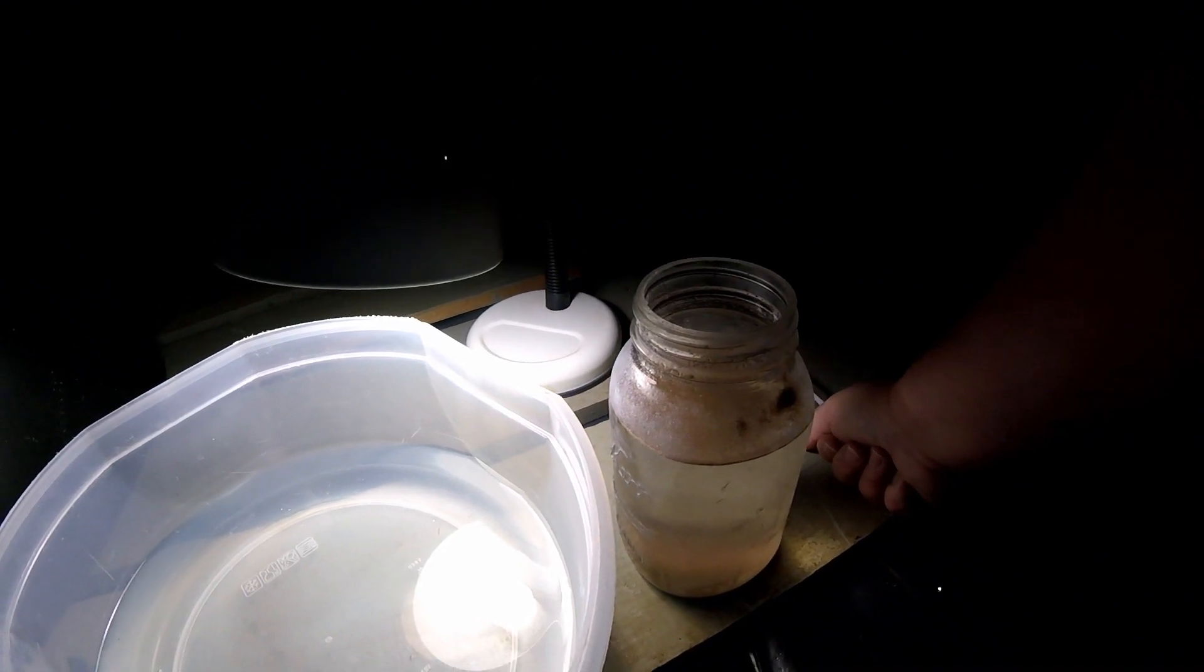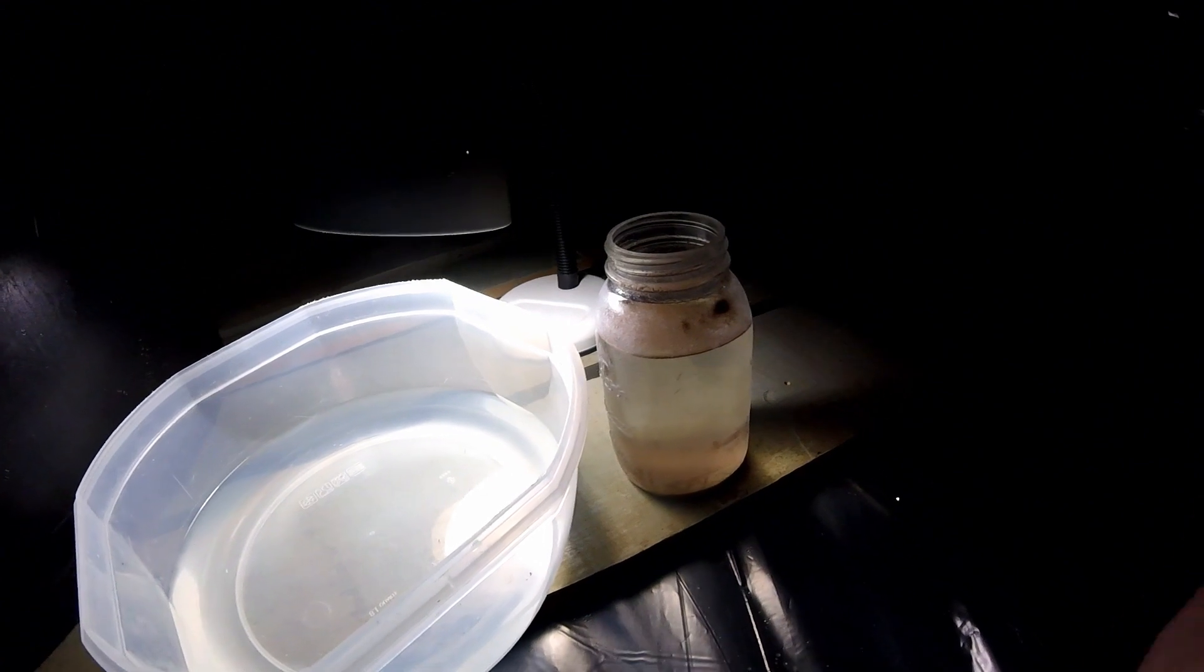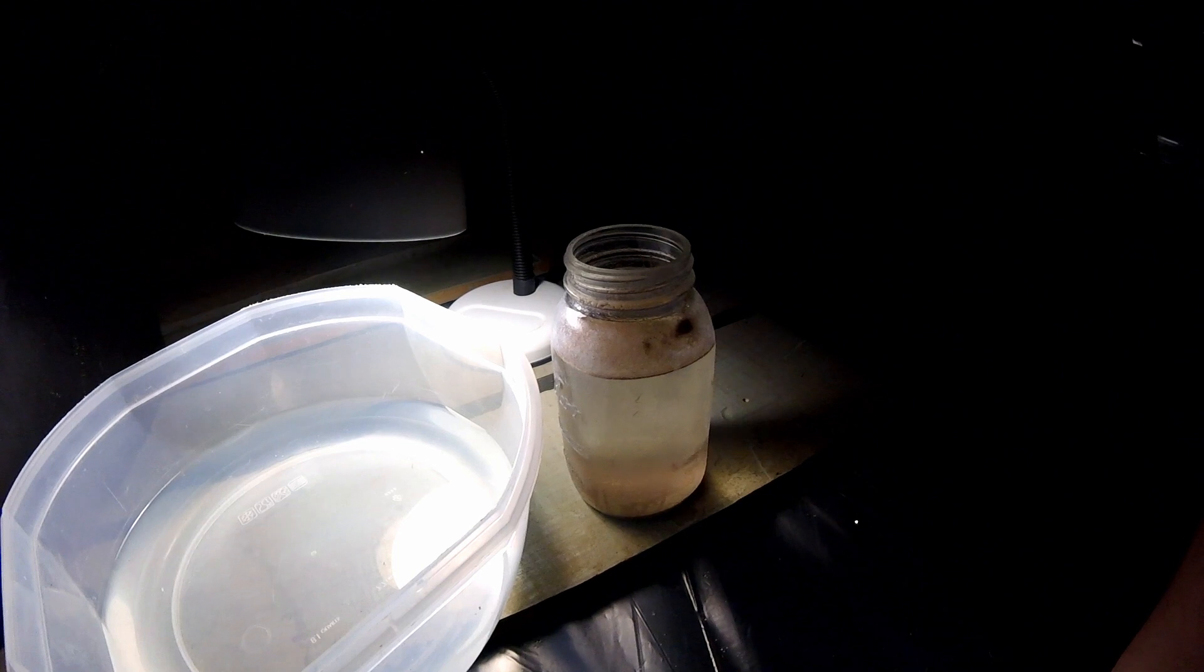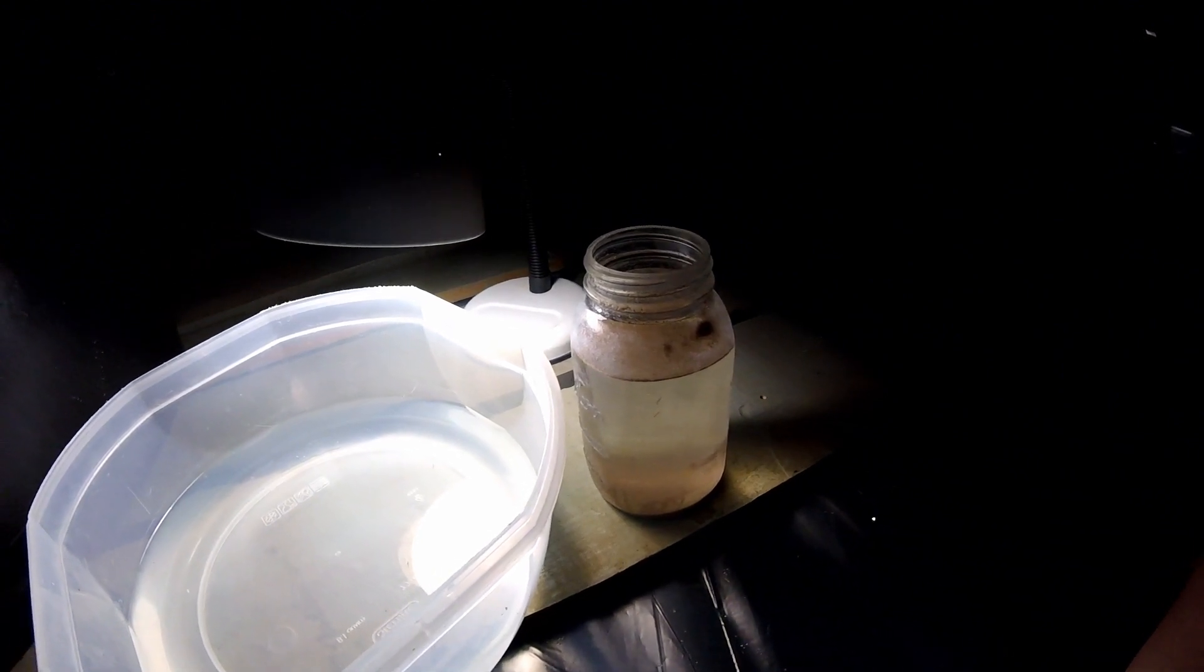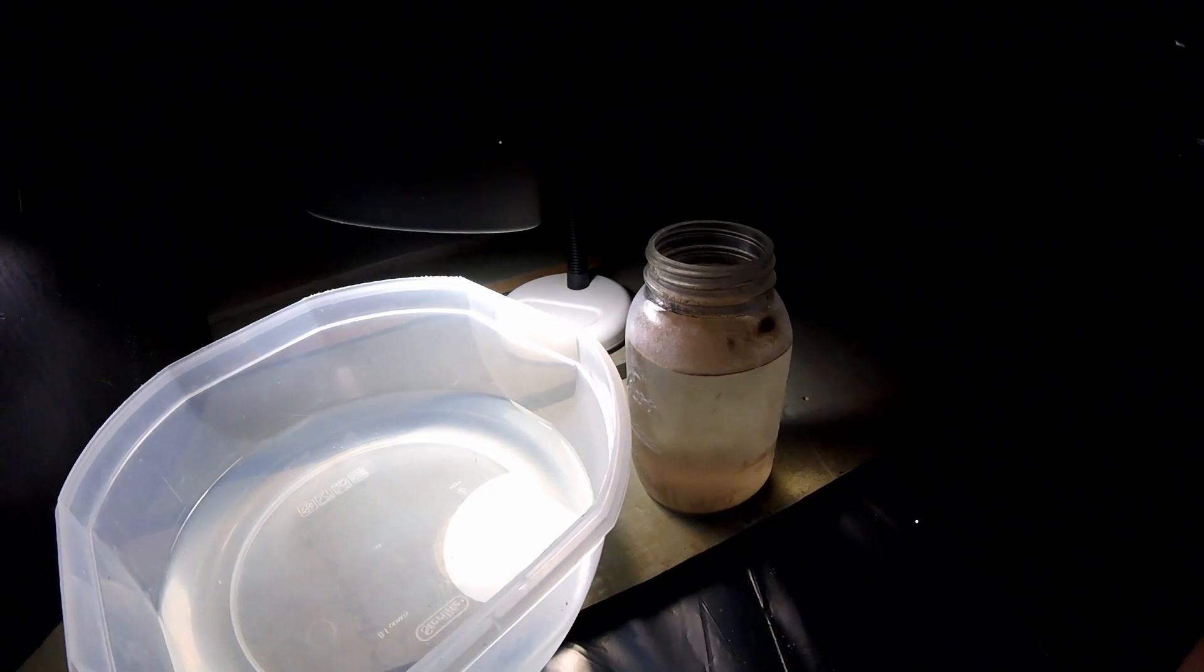Once they've hatched, feeding them - I do cycle out two jars, so I do two heavy feedings a day of fresh hatch brine shrimp. That's all I do until about two weeks when I start adding in gel food. So that is simply it. That's when you have eggs, oh my god what do I do? That's what you do.